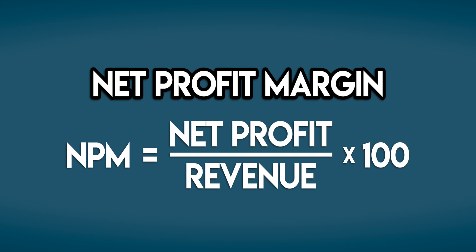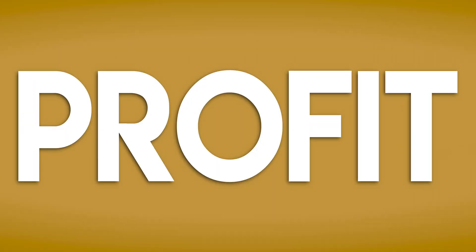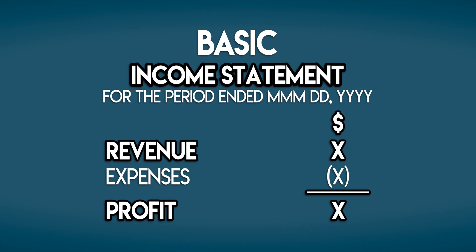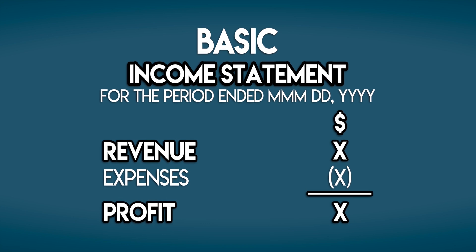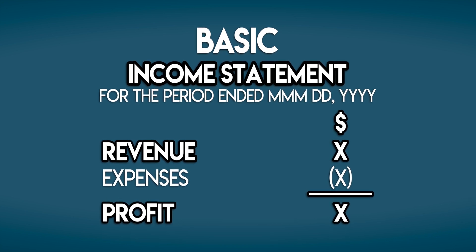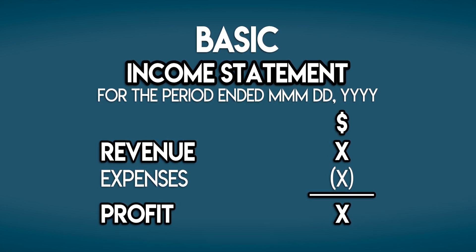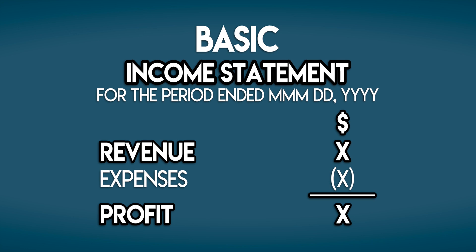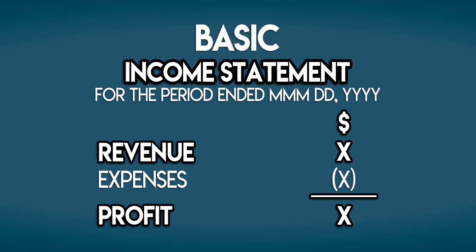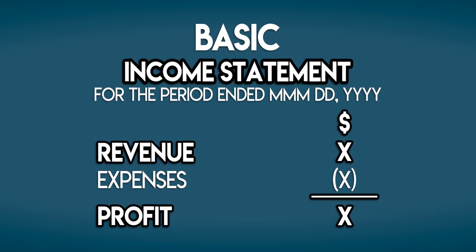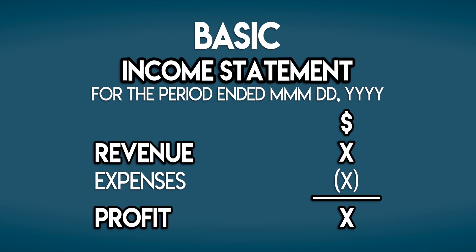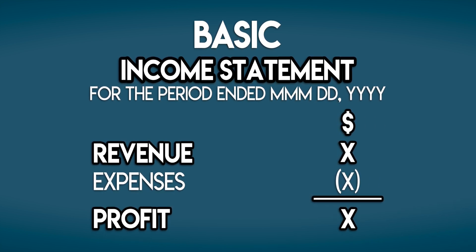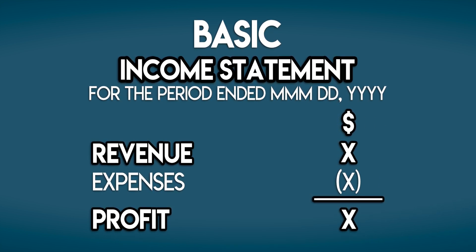First, profit. We can find profit in a business's income statement — the financial report that summarizes its revenues and expenses over a period of time. Profit is the financial gain generated in a business when its revenues are bigger than its expenses.